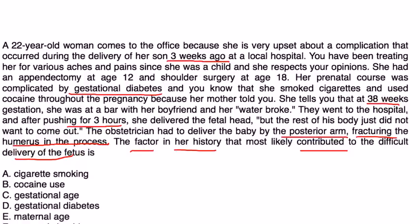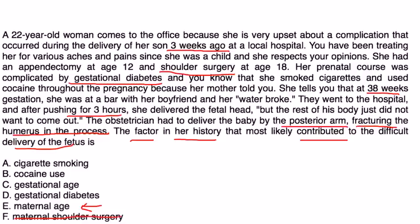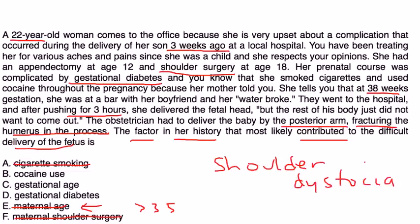The fact that she had shoulder surgery might sound similar to what happened to the baby, but it's unrelated. Maternal age has some relation to shoulder dystocia, but only if it's advanced maternal age — greater than 35 — and she's only 22. Cigarette smoking has not been associated with shoulder dystocia, and cocaine is also not associated with shoulder dystocia. So we're down to two: age or the diabetes.